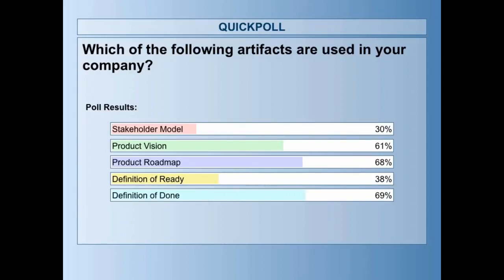Looking at the poll results: 69% of respondents selected definition of done — really good. 68% answered product roadmap and 61% answered product vision. Those are all good things to have. Definition of ready is also really good, because if more organizations had a definition of ready, they would actually see their productivity increase. Stakeholder model was selected by 30% of those responding.